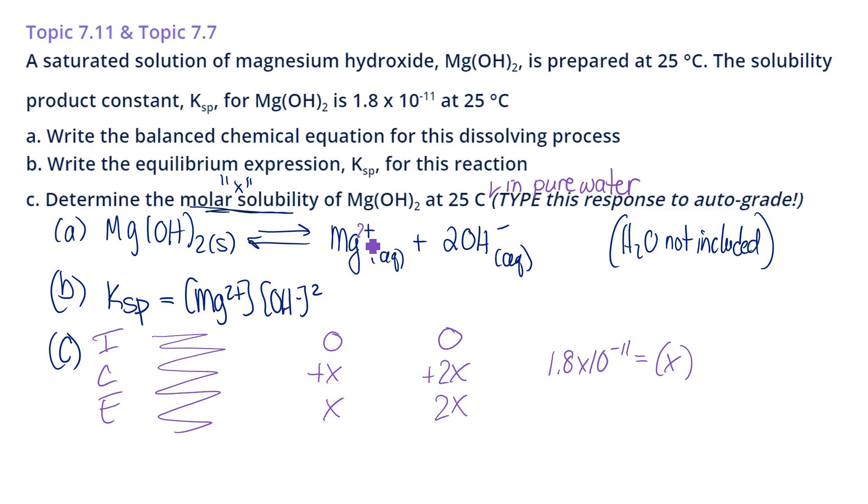Oh, I just realized I left off the plus 2 charge. Okay, so X is my magnesium. 2X is my hydroxide.